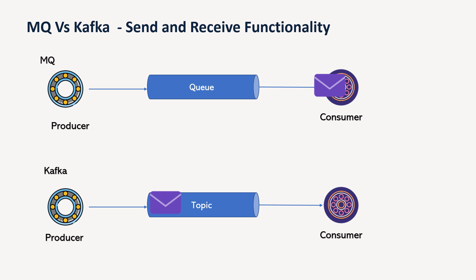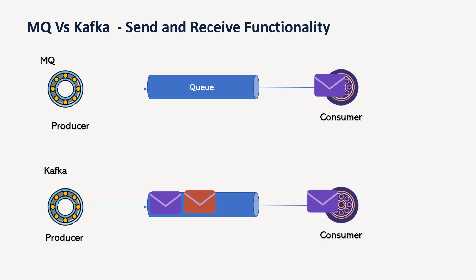The key difference here is that in MQ, the message is just read once and destroyed. But in Kafka, the message is stored or persisted for some time — it depends upon your requirement. So Kafka won't destroy the message immediately; it will store it for some time.